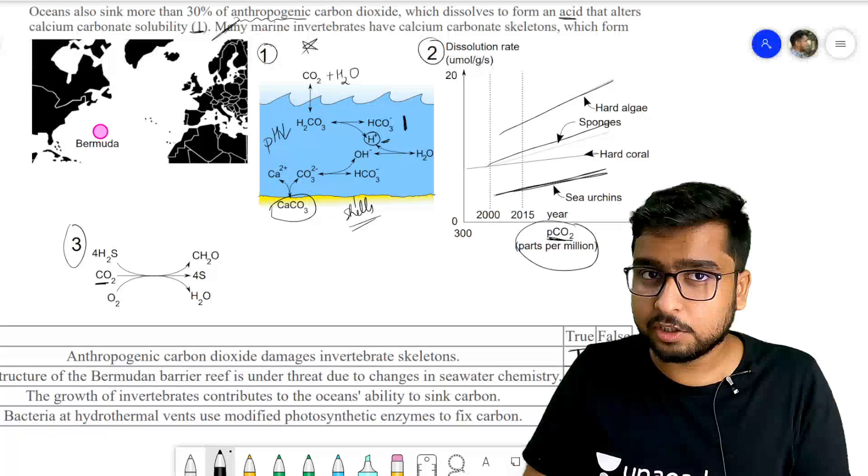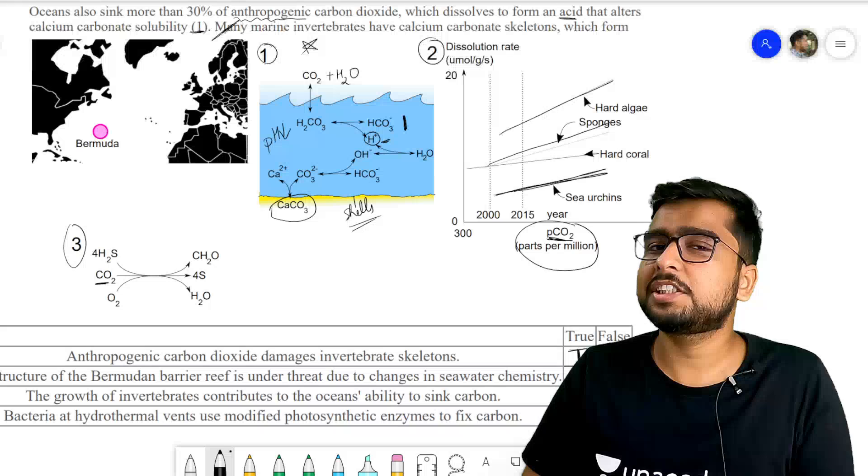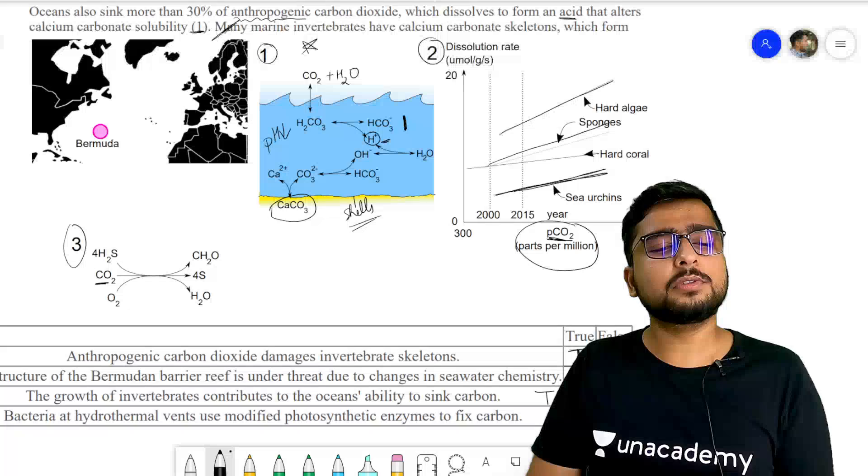The growth of invertebrates contributes to the ocean's ability to sink carbon. Jitna zyadha invertebrates honge, utna zyadha wo shell banayenge. Utna zyadha shell banane ka matlab, utna zyadha they can absorb the CO2 and turn it into calcium carbonate. So this is completely true. Bilkul sahhi baat hai. The more we have invertebrates, the more will be the ocean ka ability to sink carbon, sink matlab absorb carbon.